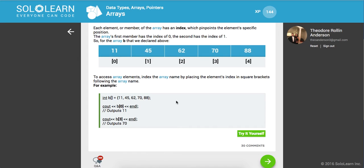To access array elements, index the array by placing the element's index in square brackets following the array name. We've declared our array and now we say B[0], we want to output that to the console. What this means is grab this array of B, reach into that data structure and return to us this index, so it's 11.